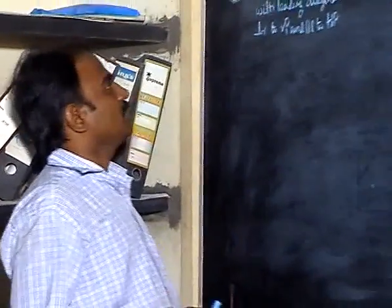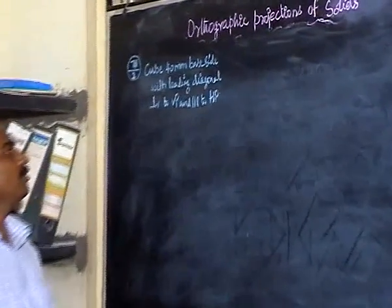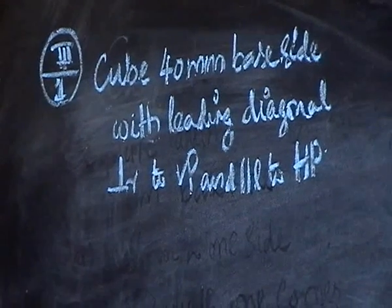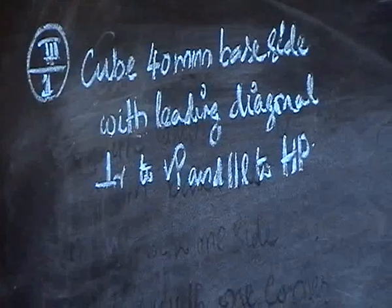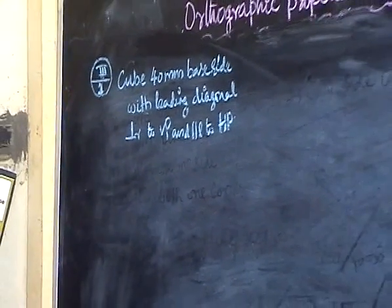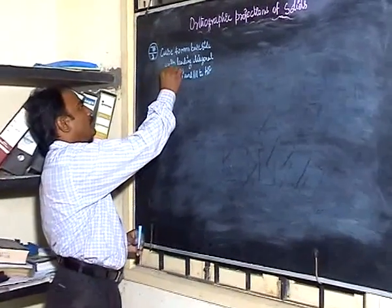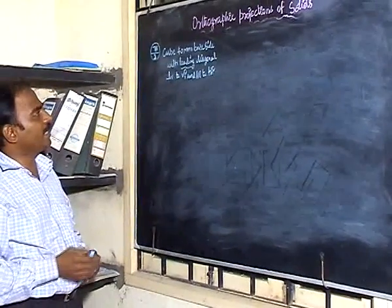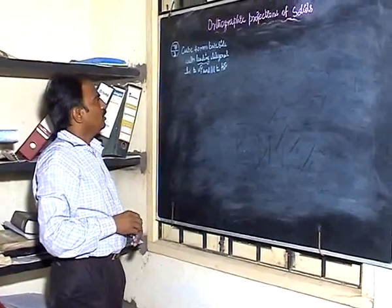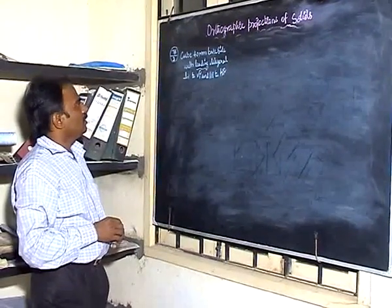First take the cube — a cube with a 40 mm base side, with the leading diagonal perpendicular to VP and parallel to HP. Once you know the cube base side, everything is given. A cube is a hexahedron with all six square faces. The key point is to identify which diagonal is the leading diagonal, so that in your final front view and top view the leading diagonal is kept perpendicular to VP and parallel to HP.